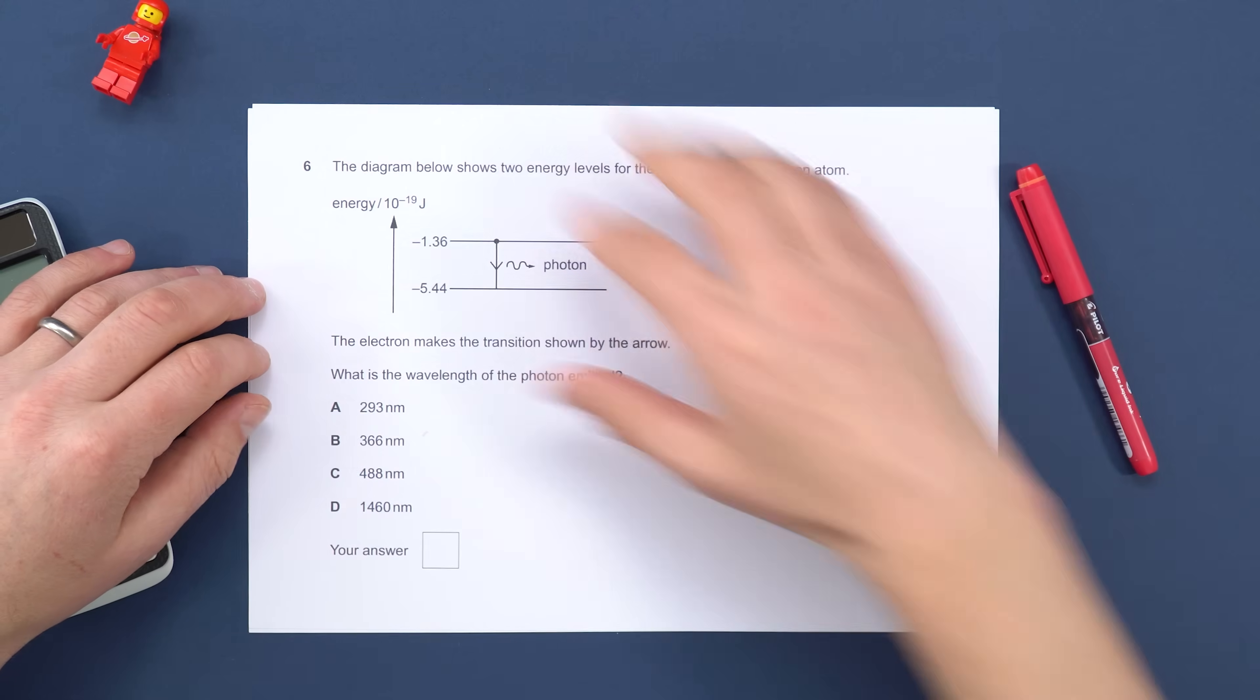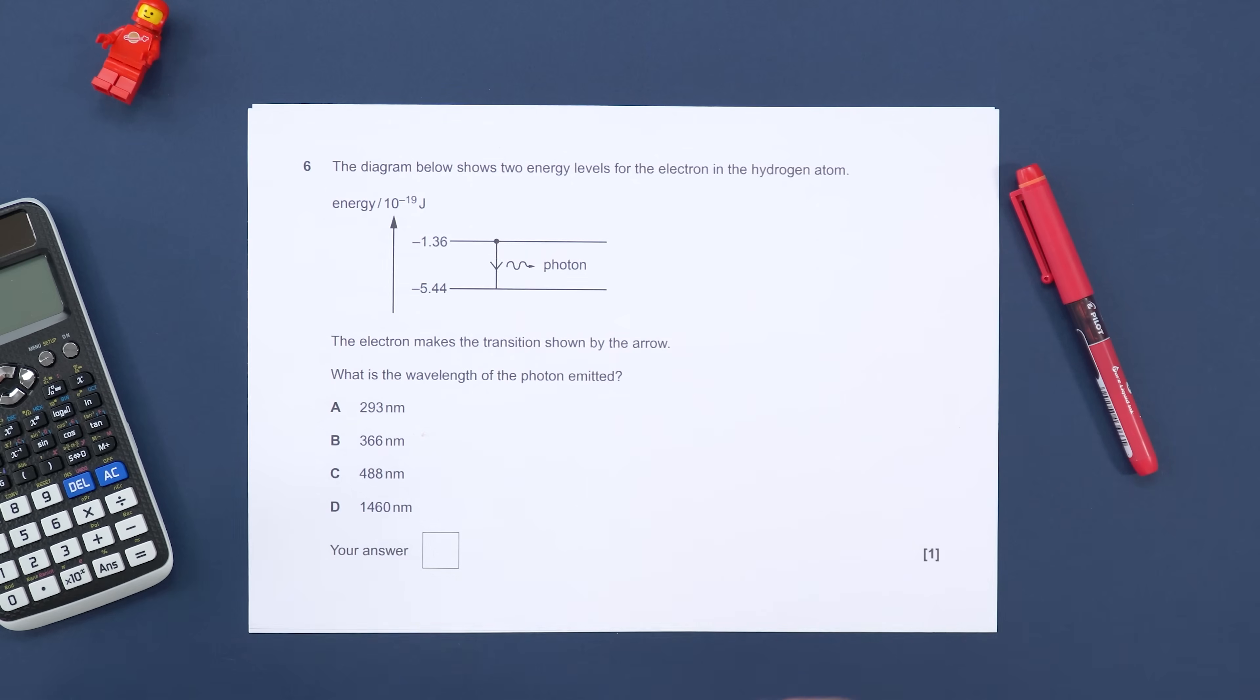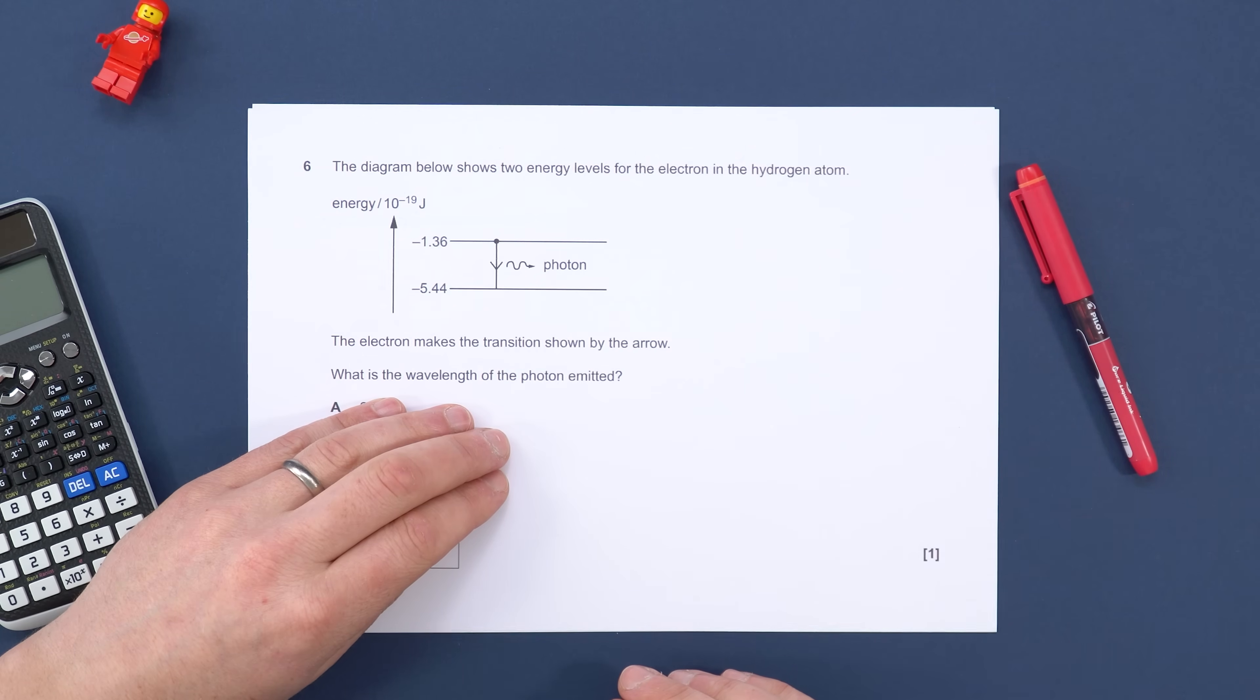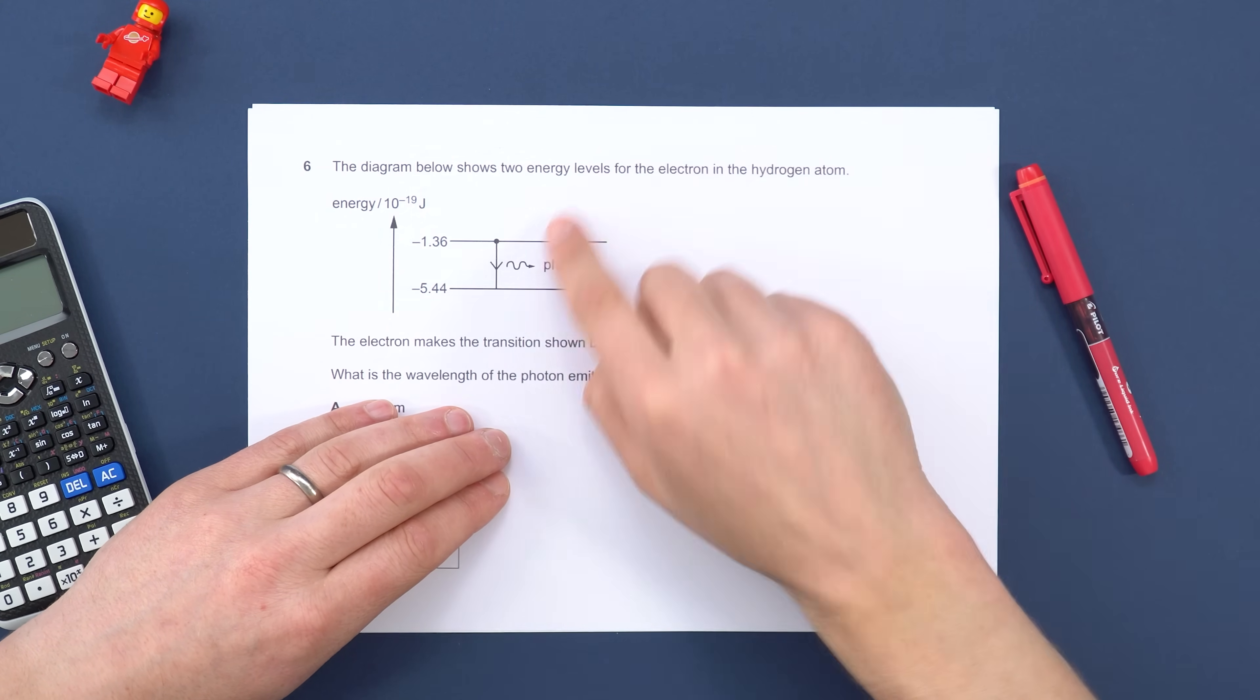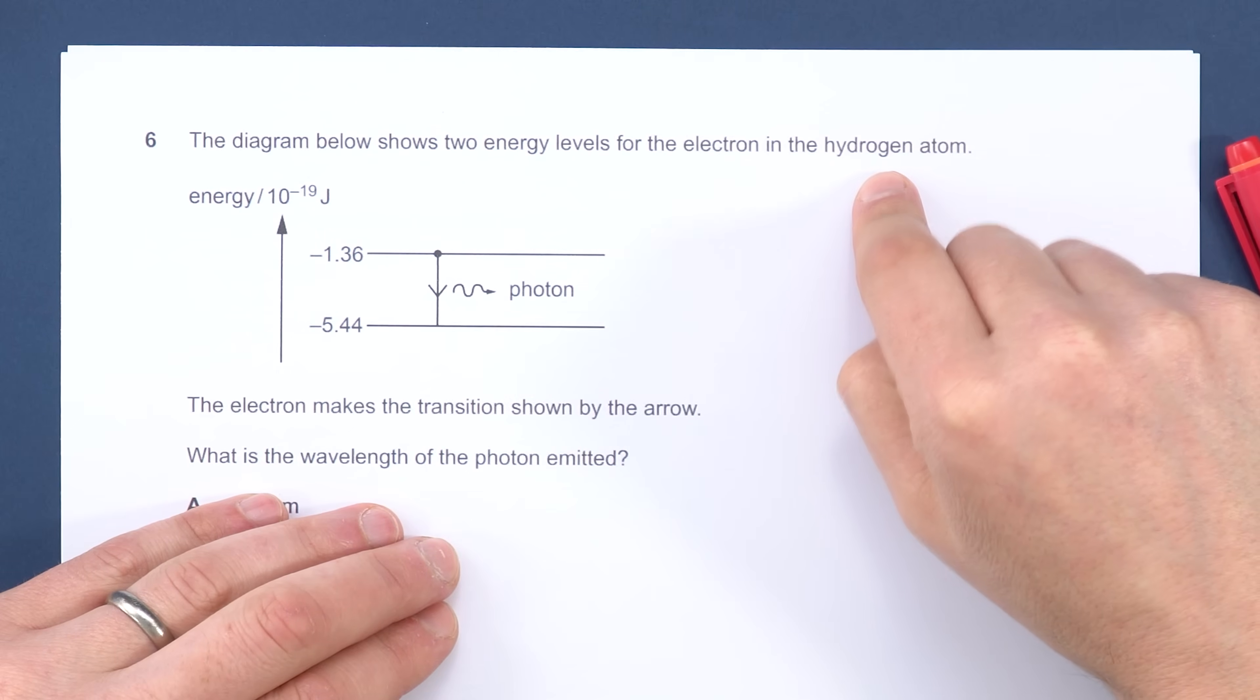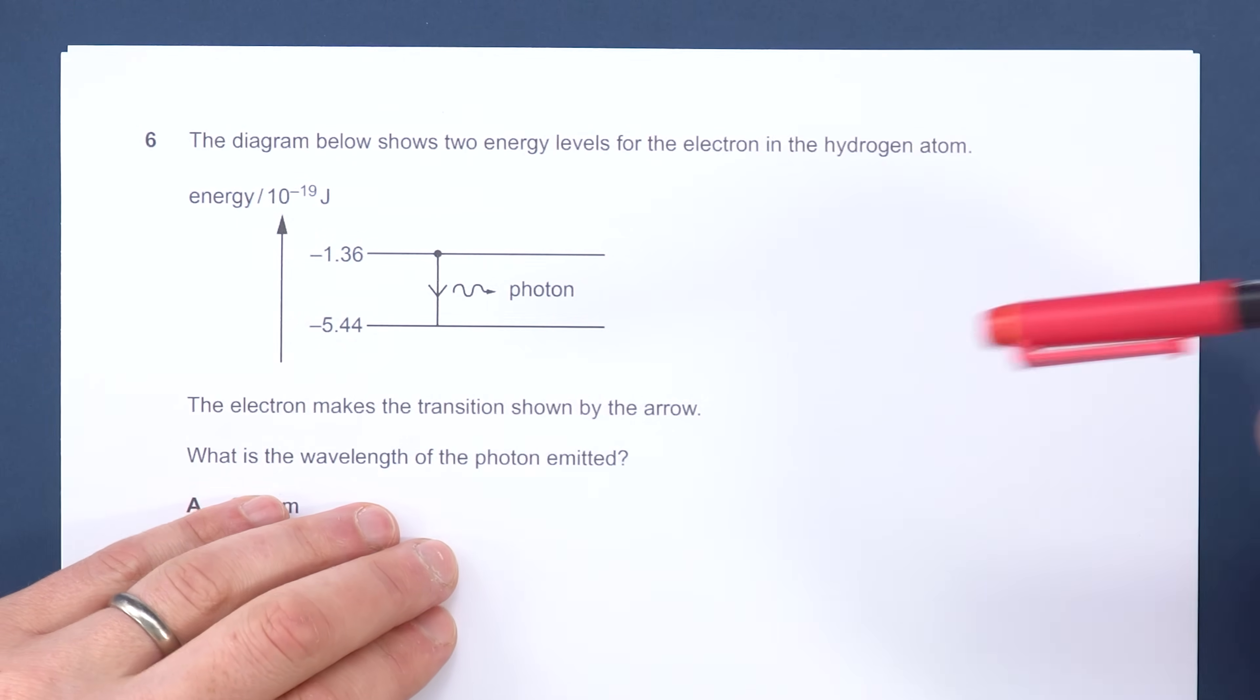There is no secret to this. You just need to understand and know the subject. So although it might be a multiple choice question, there's no particular technique. What I would do is I wouldn't even look at the answers first of all. Instead, I would concentrate on the question, so this one is about energy levels in a hydrogen atom. The electron makes this transition shown, what is the wavelength?